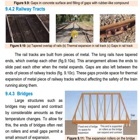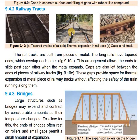Railway tracks are very long, and if gaps are not provided between them or thermal expansion is not taken into account, they become bent and twisted like this.